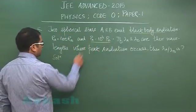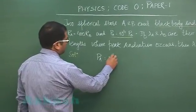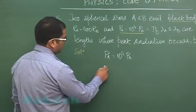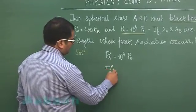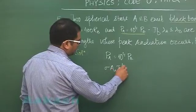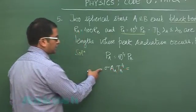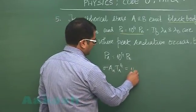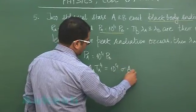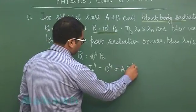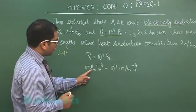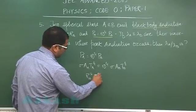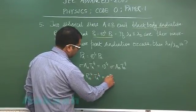Let's use the first fact: P_A is 10 raised to the power 4 times P_B. The power emitted would be sigma area of A times T_A raised to the power 4. There is no question of writing emissivity because that would be 1. This would be 10 raised to the power 4 sigma A_B T_B raised to the power 4, and area would be 4 pi R square. So eventually R_A square T_A raised to the power 4 would be 10 raised to the power 4.